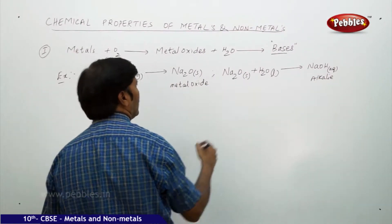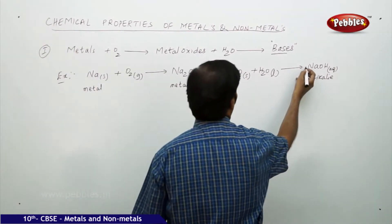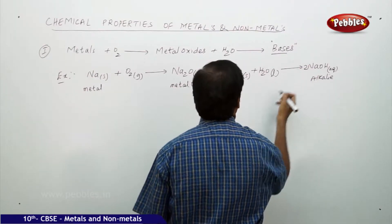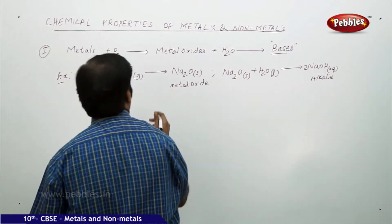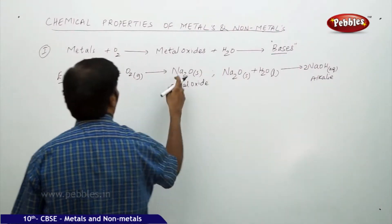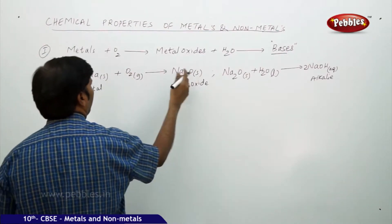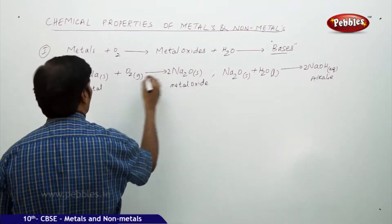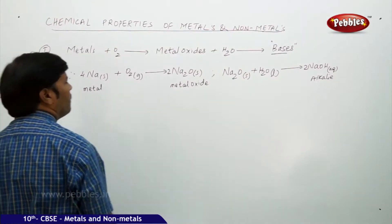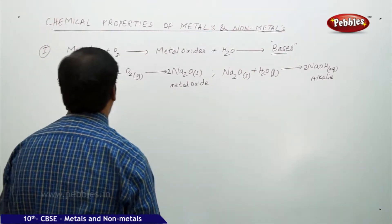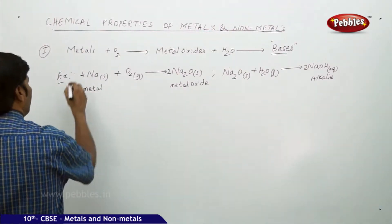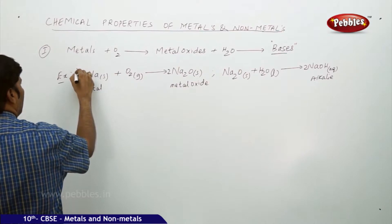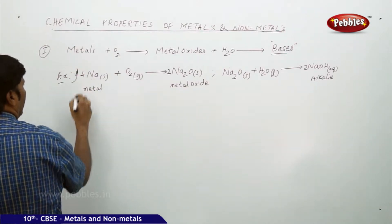Balance the equation: there are two sodiums here, so take two over here — the reaction is balanced. Here we have two sodiums, two oxygens on one side, take two here and four here. This is the first example.